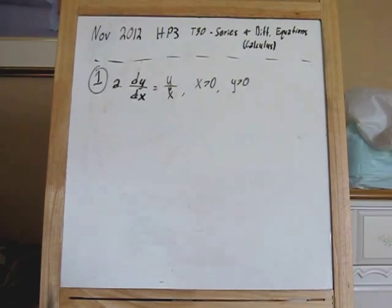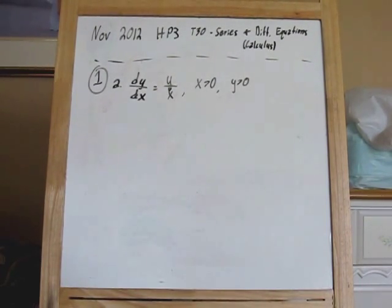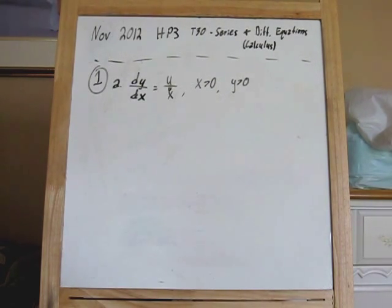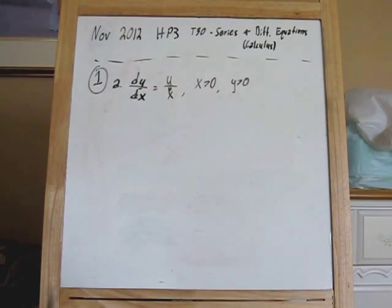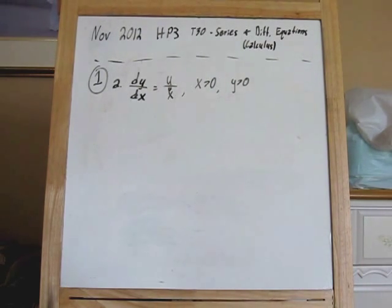In this video we are going to look at the first question from the external exam of the IB from November 2012. This is the higher level paper 3 from math, from time zone 0. Paper 3 is based on the option topic, which in this situation is Series and Differential Equations, which the IB now calls the Calculus Option.